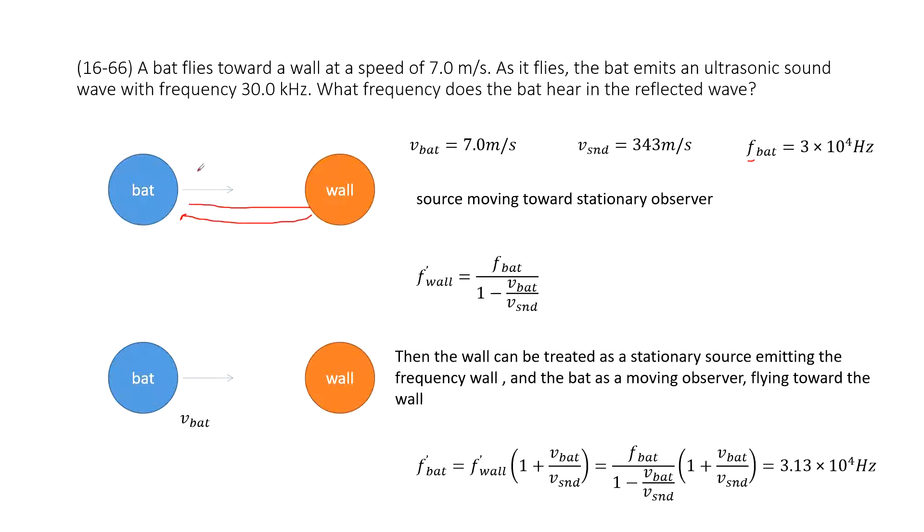So, at step one, the sound wave travels from the bat to the wall. We can see this is the source moving towards the stationary observer.